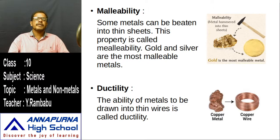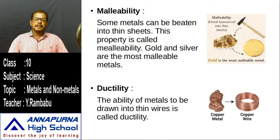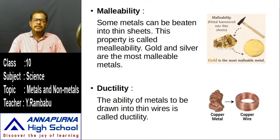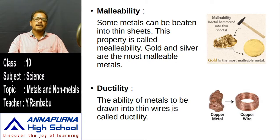The next important property is ductility. Copper and aluminum wires are used in electrical transmission. When extracted from the earth, these metals are in bulk solid form. This bulk solid mass of metal can be drawn into thin wires — this property is called ductility.